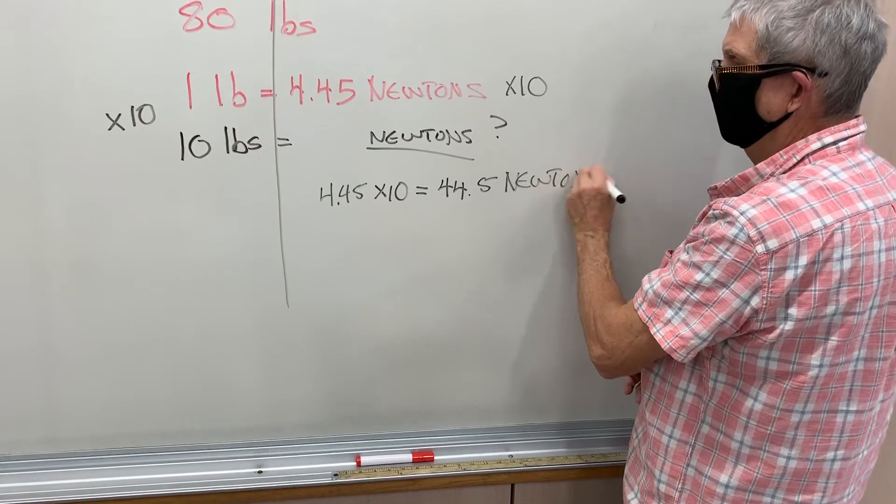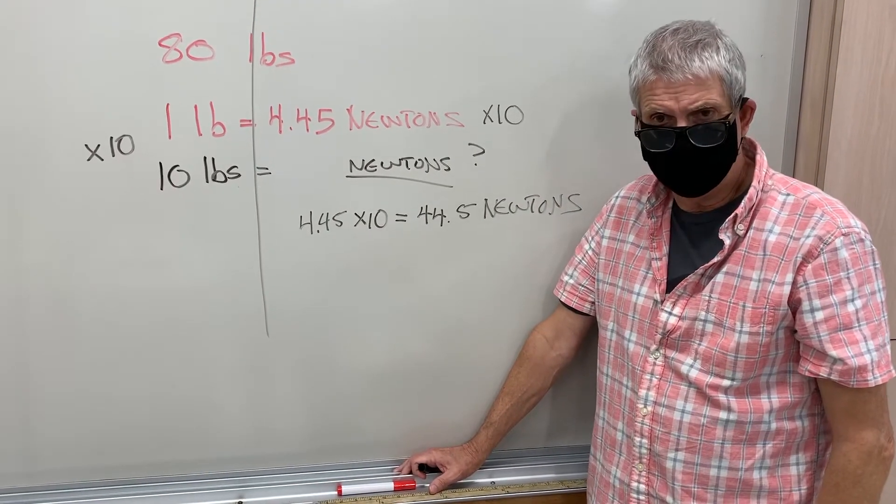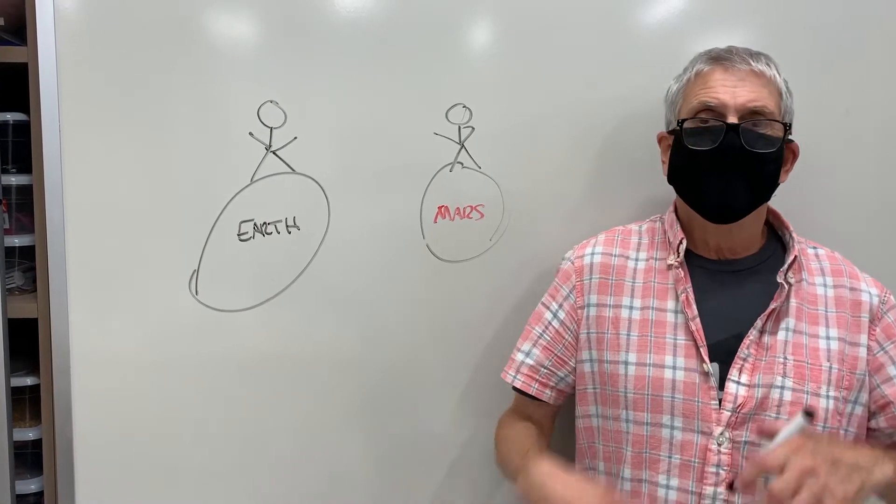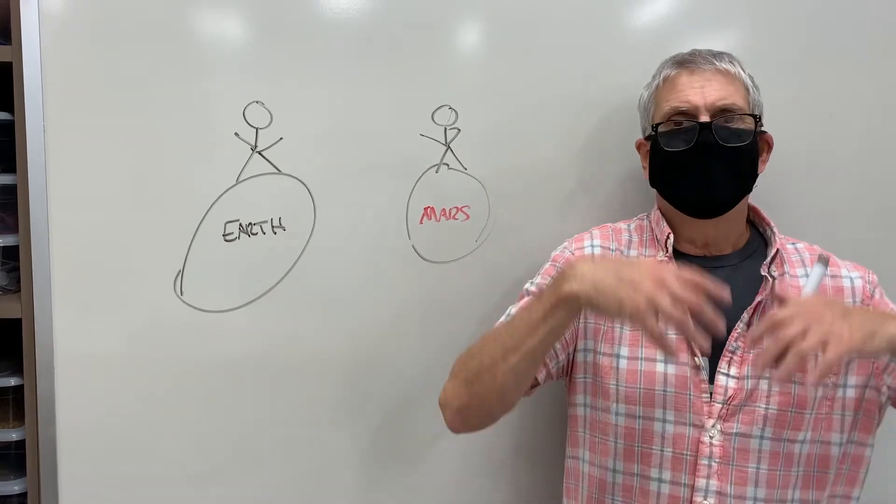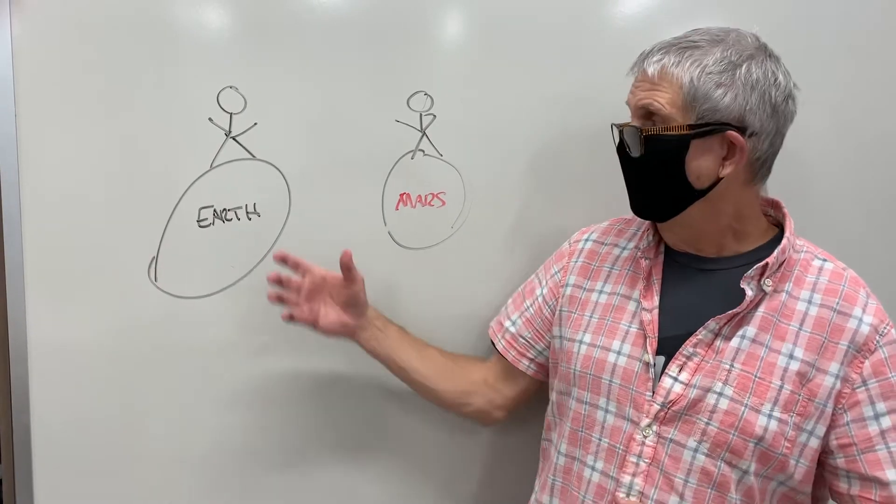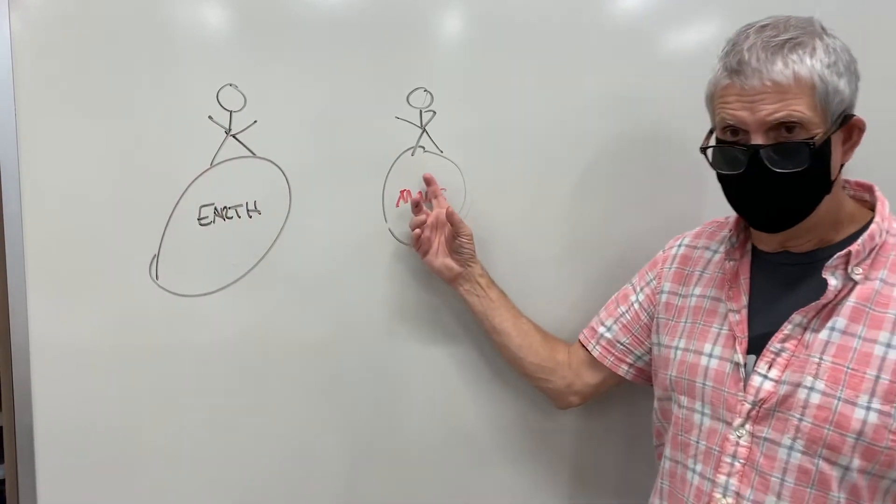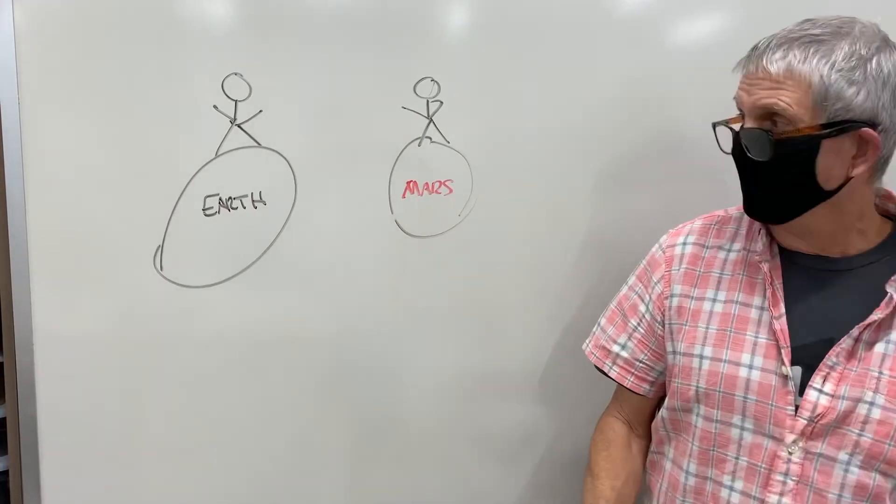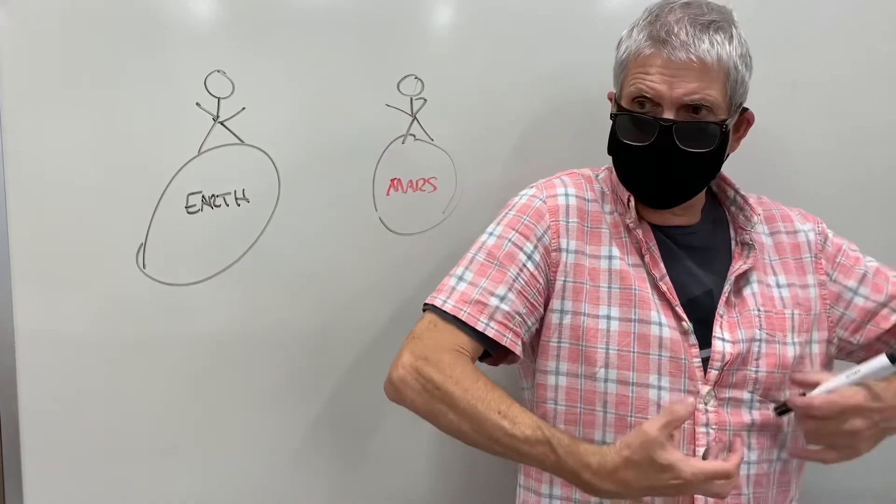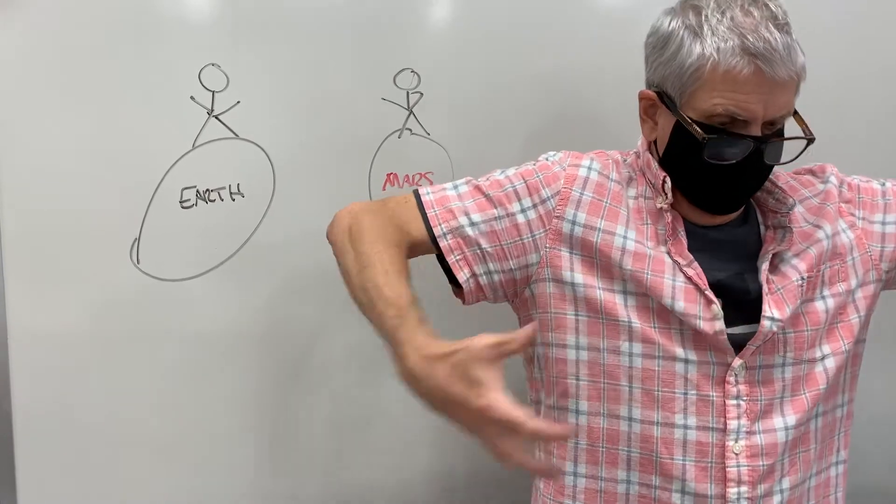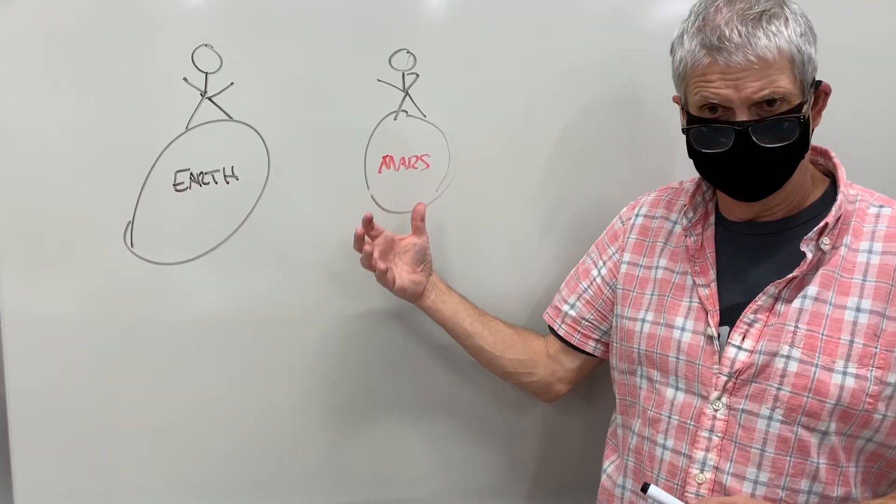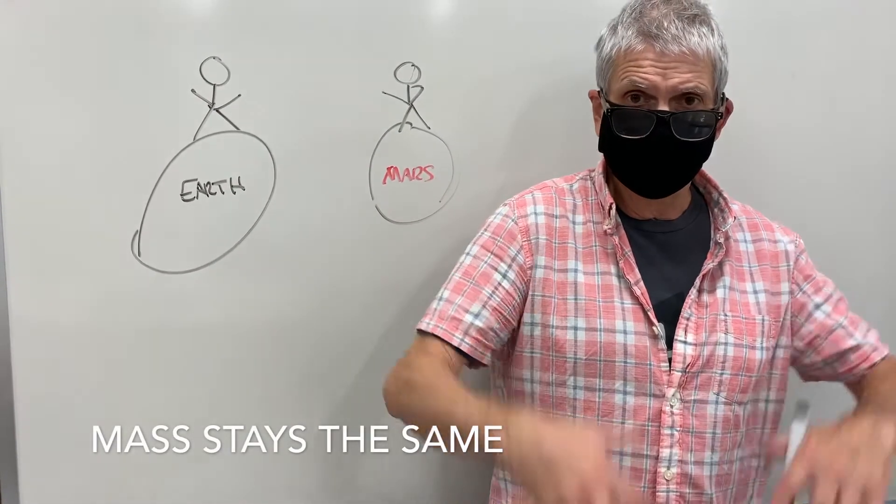I want to explain the difference between mass and weight, and it's not that easy to comprehend. So I've come up with a pretty simple example. I'm standing on Earth, and here I am standing on Mars, allegedly. My mass is how much my molecules—how dense I am—my representative mass. That's not going to change if I'm on Earth, Jupiter, or Mars. But what's going to change is my weight.